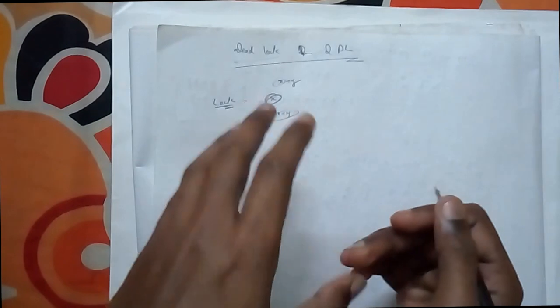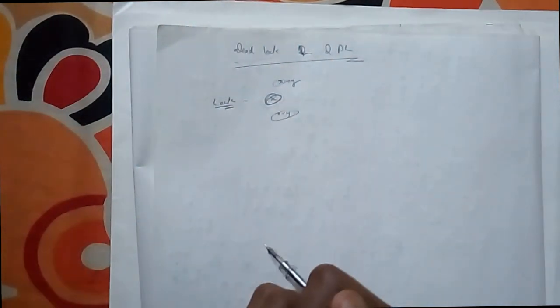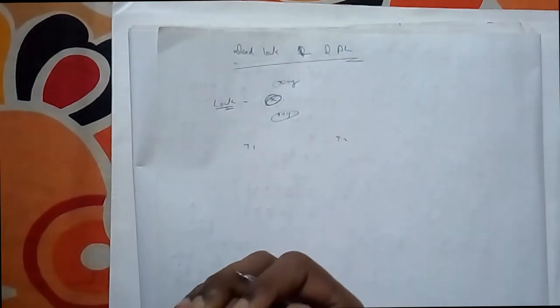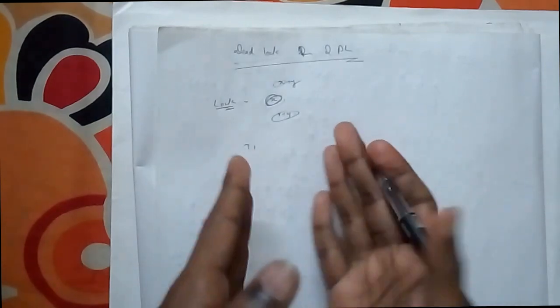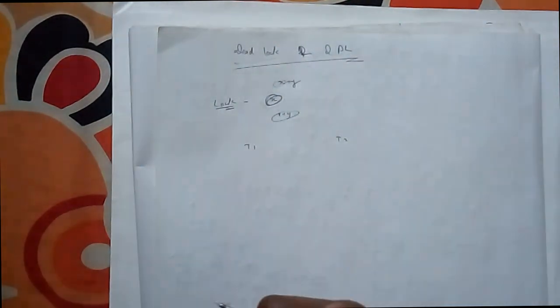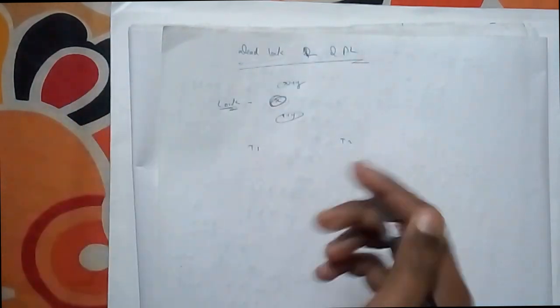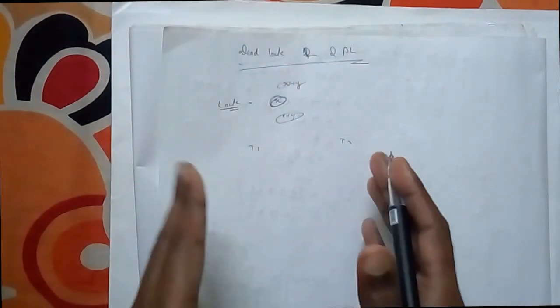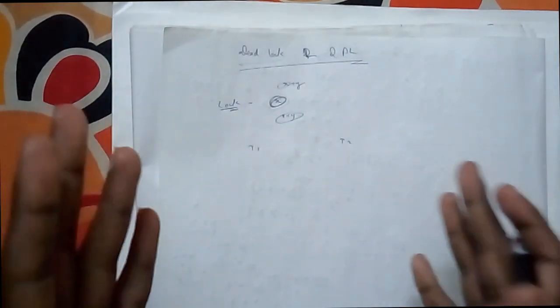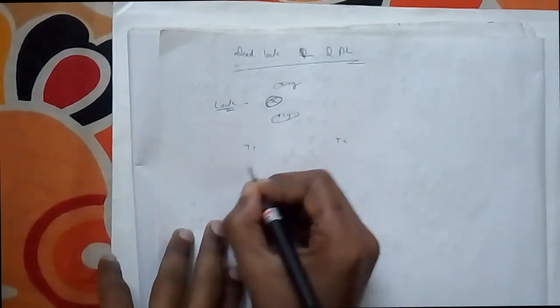So when does a deadlock occur? There are many chances for a deadlock to happen. Suppose there are two systems — both need an object that is held by the other system to complete their transaction. They have gathered locks on both objects and will not release them because they are needed to complete their own transactions. That is when deadlock occurs.